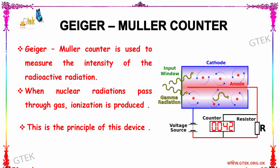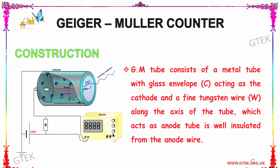You can see the picture on the right side showing the Geiger-Müller counter. Now let us see about its construction. This Geiger-Müller tube, or GM tube, consists of a metal tube with a glass envelope C acting as a cathode. The glass envelope forms the cathode, and a fine tungsten wire W is taken along the axis of the tube.